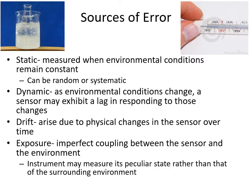We discussed different types of errors in the first lecture — static, dynamic, drift, and exposure errors. These are things we have to deal with all the time and need to recognize in terms of how they influence observations.